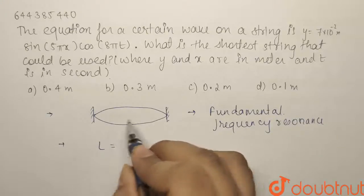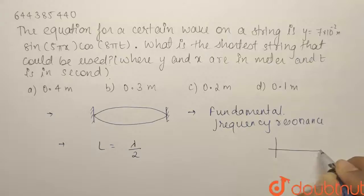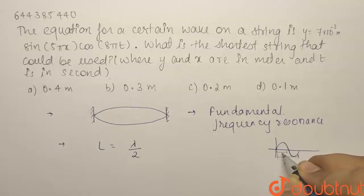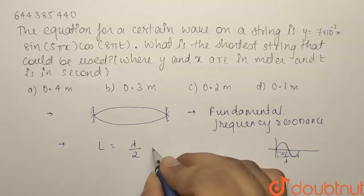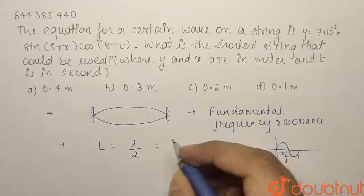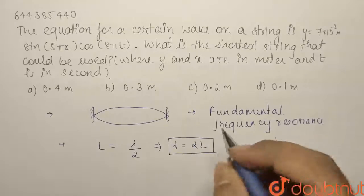This distance is λ/2. So L = λ/2. From here, we get λ = 2L. Now what is lambda? We know λ = 2π/k.